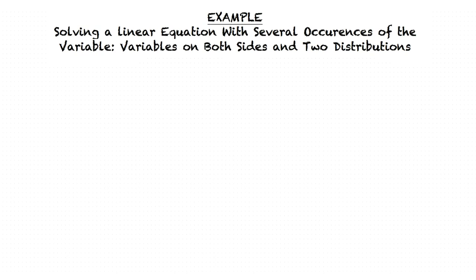Let's take a look at the example we're going to be working through. Here we are given the problem negative 6 times the quantity of 3u minus 2 plus 4u equals 4 times the quantity u plus 1.